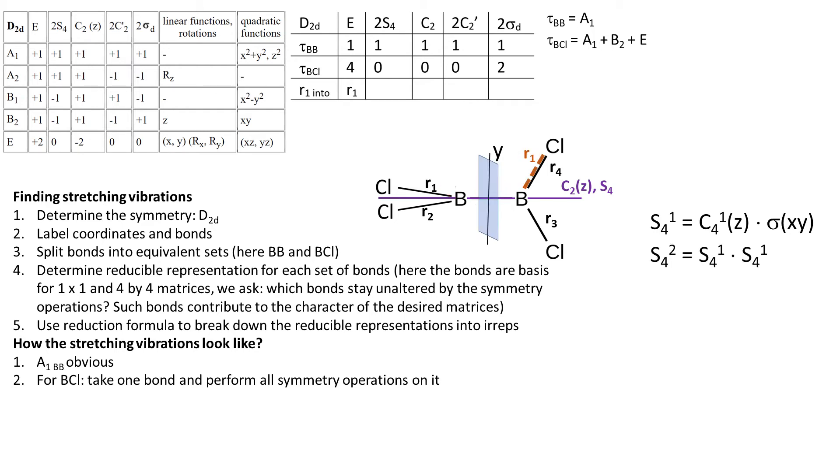S4² is just S4¹ done twice, so again rotation by 90 degrees and reflection takes us to R2. And if you watched my video on symmetry operations, you know that S4² in fact reduces to C2.